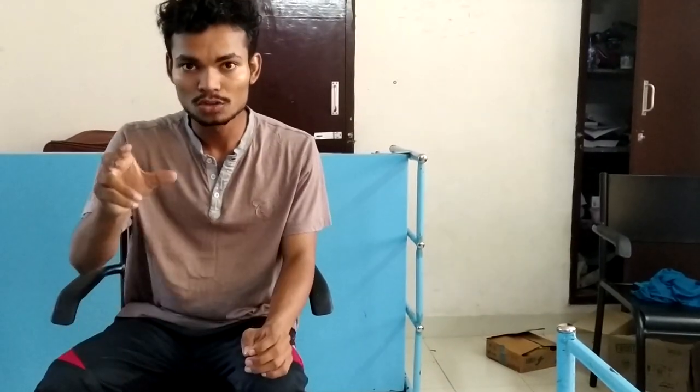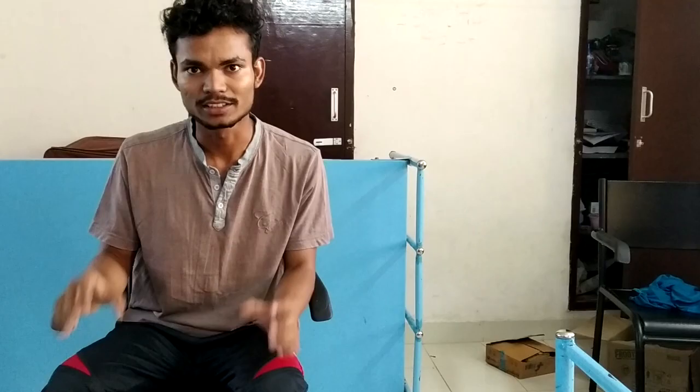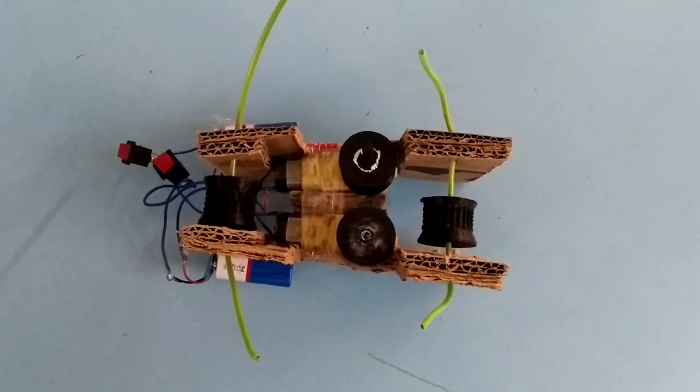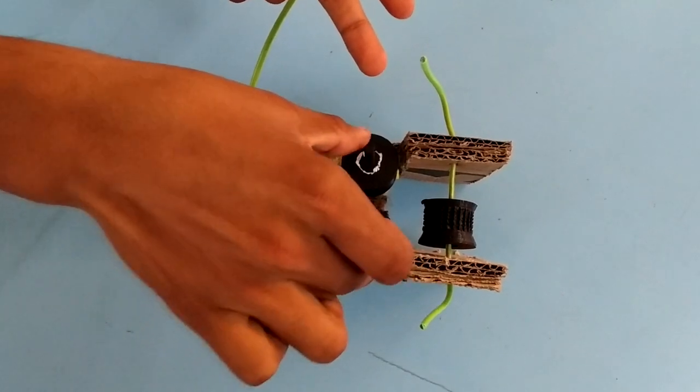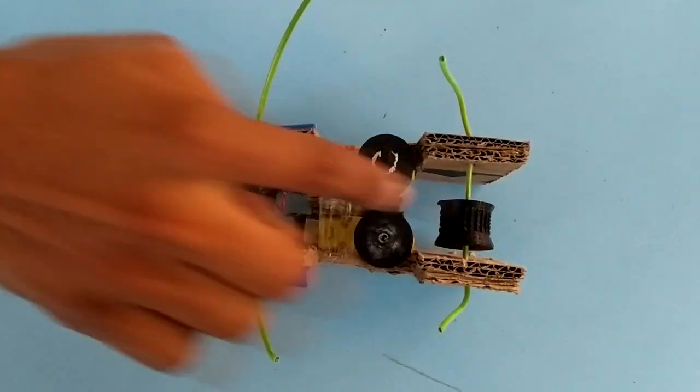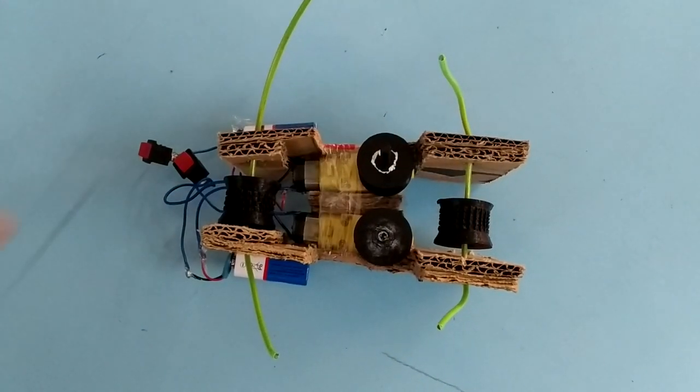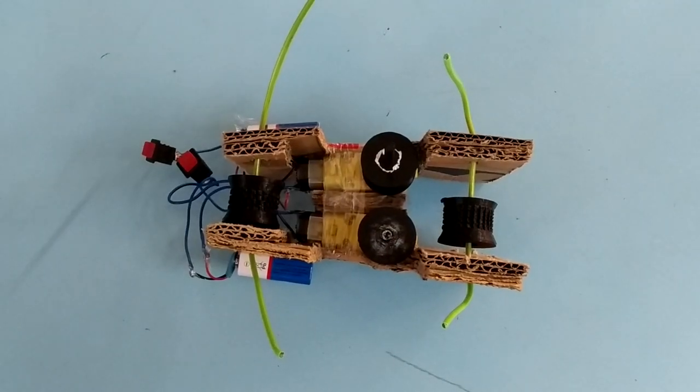Now I am going to explain how our robot works. Here, we are using 4 wheels. The rope will go through between these 2 wheels, and these 2 wheels we are using to support against gravity.